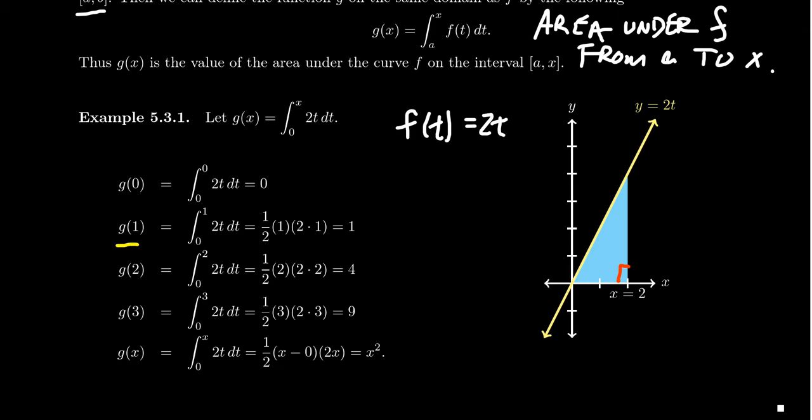How about g(1)? g(1) says we're going to go from 0 to 1. We want to capture the area of this triangle. This is a right triangle, so we can find the area by taking 1/2 base times height. The base of this triangle would be 1. The height would be f(2), which is 2. So you get 1/2 times 1 times 2, which gives us an area of 1.